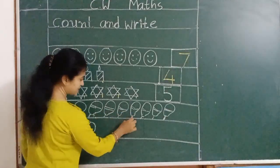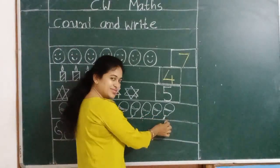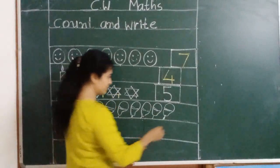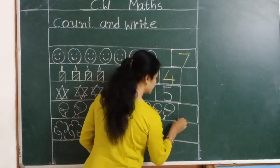5, 6, 7, 8 and 9 balloons here. So we should write here 9. 9. Okay.